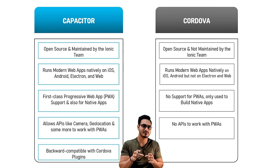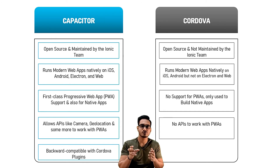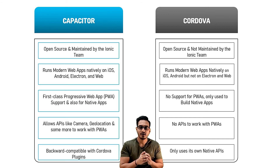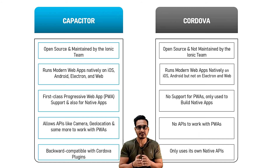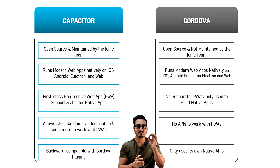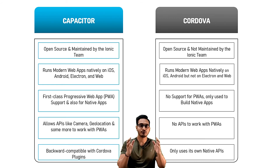We can use the official plugins provided by the Ionic team, community plugins for Capacitor, and if you need additional functionality — such as making phone calls — you can still use Cordova plugins. Cordova, however, only uses its own native APIs for building applications. Capacitor is also called the spiritual successor of Apache Cordova.